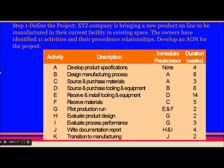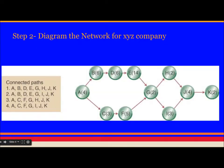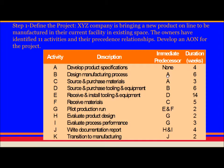This is an example for mathematical analysis. XYZ company is bringing a new product online to be manufactured in their current facility in existing space. The owners have identified 11 activities and their precedence relationships. Develop an AON diagram for the project. If you know Critical Path Method, you will be able to draw the activity-on-node diagram like this, which shows when each activity can take place. For example, activity B can take place only if A has completed; activity C can only start when activity A has completed; and B can only start after B has completed. These are the durations.